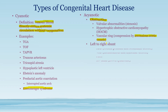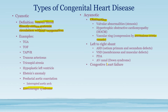We also have left-to-right shunts, meaning blood flows from the oxygenated left side to the deoxygenated right side. Because no deoxygenated blood enters systemic circulation, these patients are not cyanotic. Examples include ASD, VSD, PDA, and AV canal — all of which will be discussed in detail in later slides.